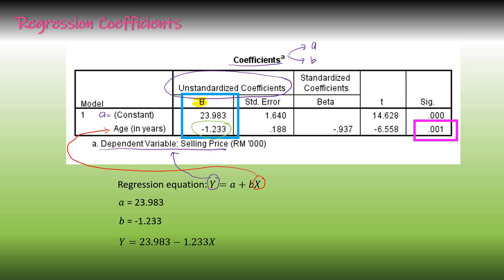Now focus on the significance value. The P-value equals 0.001, which is less than 0.05. Therefore, the predictor from this example, which is H, is a significant predictor towards selling price. The P-value is less than 0.05, which is why H becomes a significant predictor towards the dependent variable.